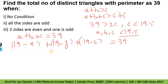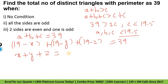So yahaan pe solve karo — x plus y plus z is equal to 57 minus 39, which is 18. So x plus y plus z = 18. A, b, c yahaan se nikalenge — total number of non-negative integral solutions.